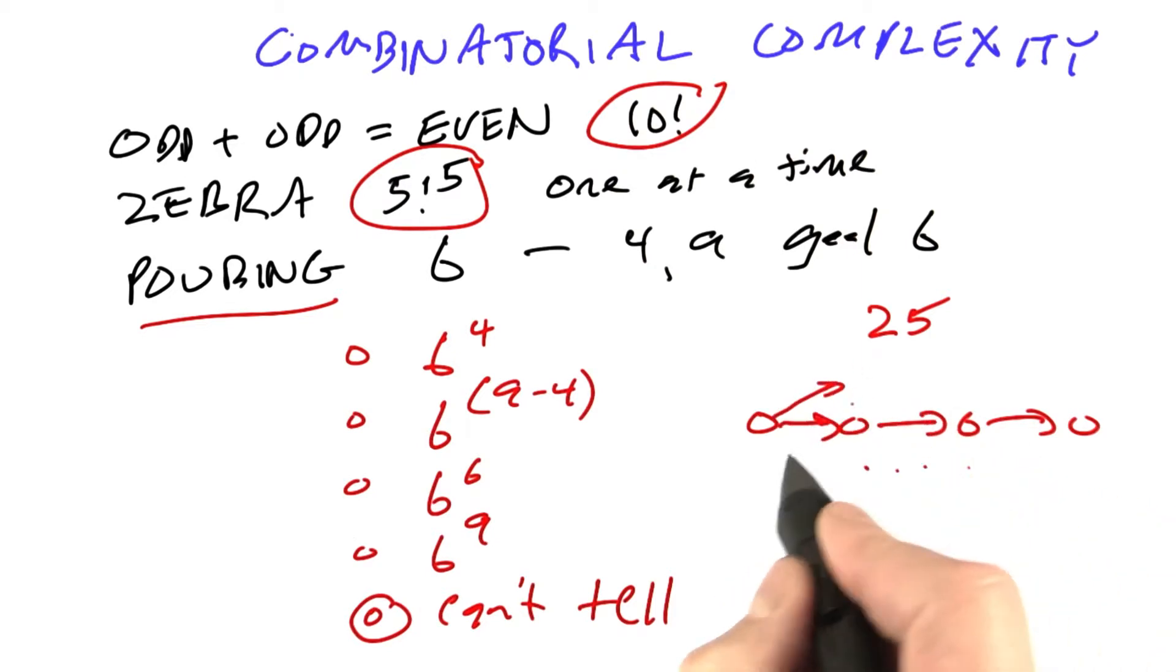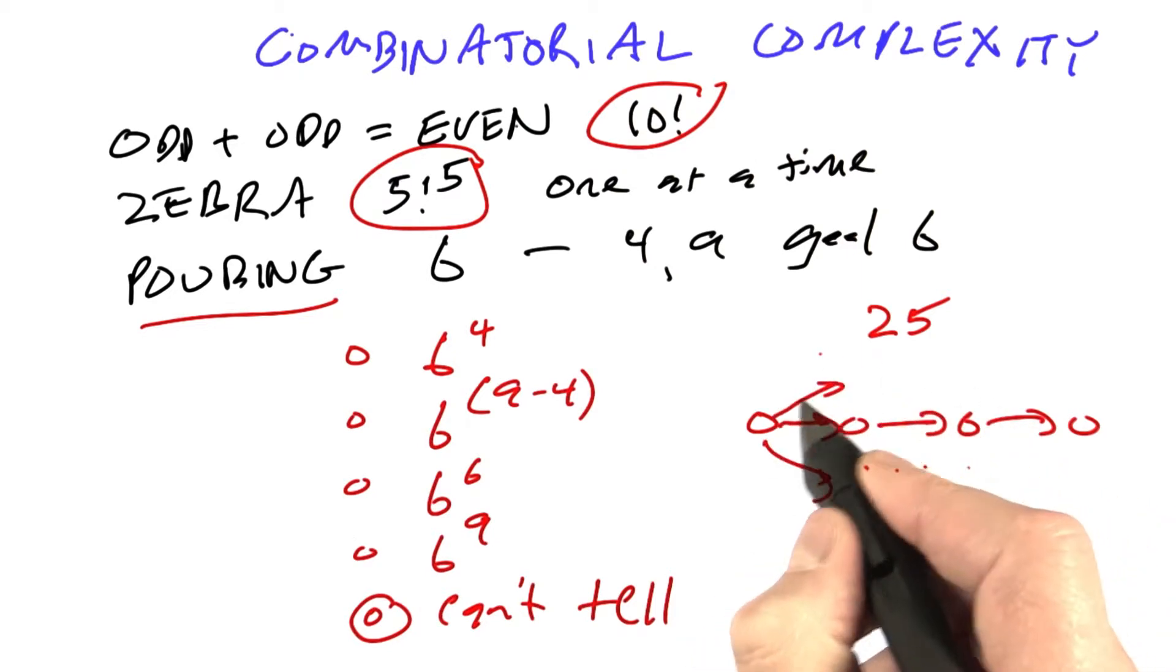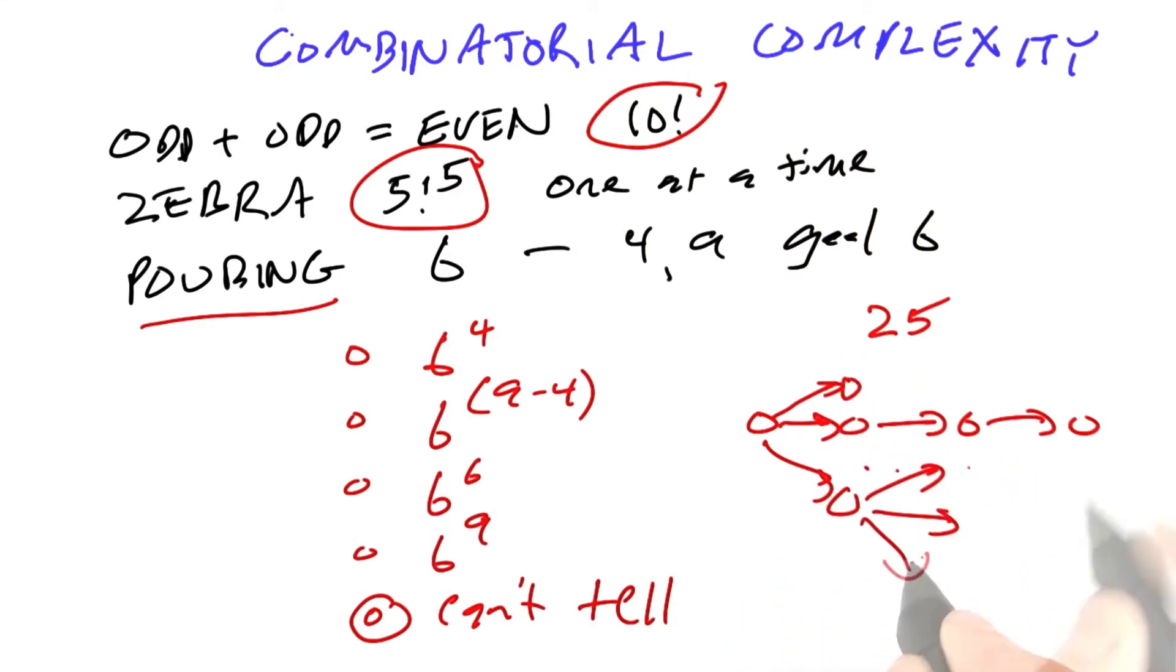Of course, at each point, we have six different options of different ways to go, and from each of those, six more. We know it's going to be roughly six to the something because we branch six at each point, but we don't know what that x is because we don't know how long the sequence is.